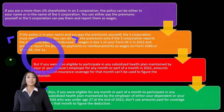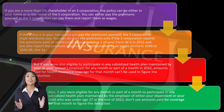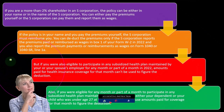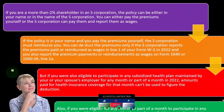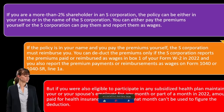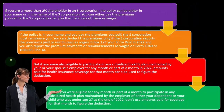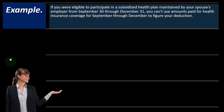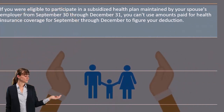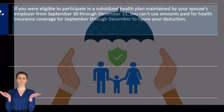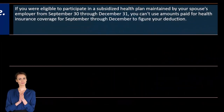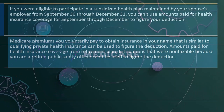Keep in mind that if your Schedule C or other business is your only income, you'll be paying self-employment tax and dealing with health insurance through your business. However, if you also have access to health insurance through W-2 income — either from another job of your own or from a spouse whose employer offers family coverage — make sure that doesn't conflict with your ability to deduct health insurance premiums. For example, if you were eligible for a subsidized plan through your spouse's employer from September 30 through December 31, you can't use amounts paid for September through December to figure your deduction.